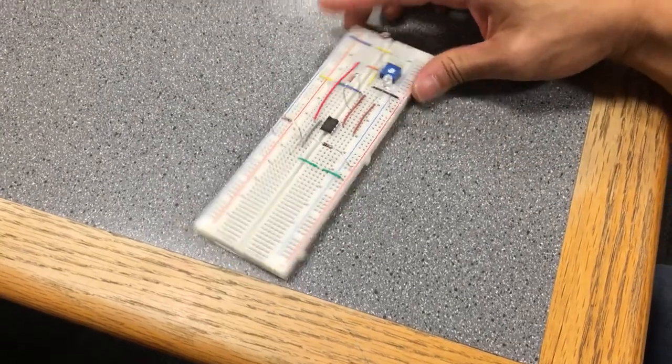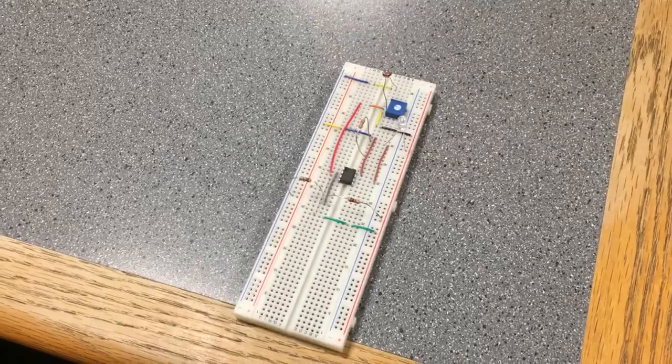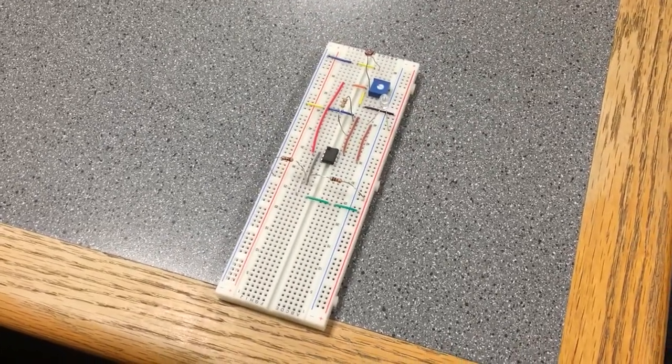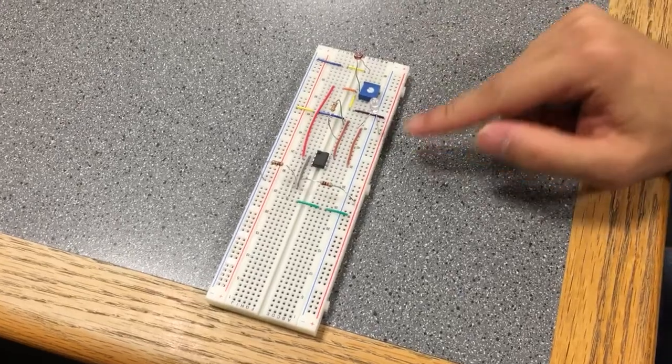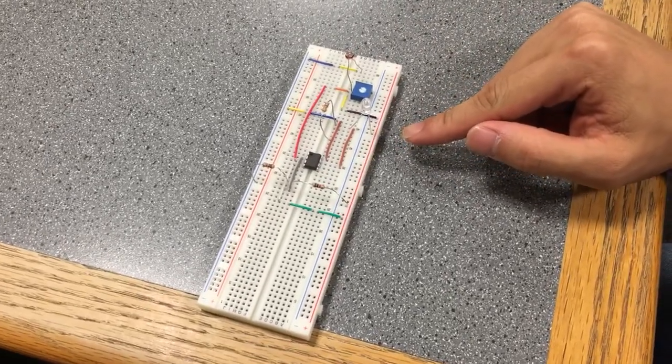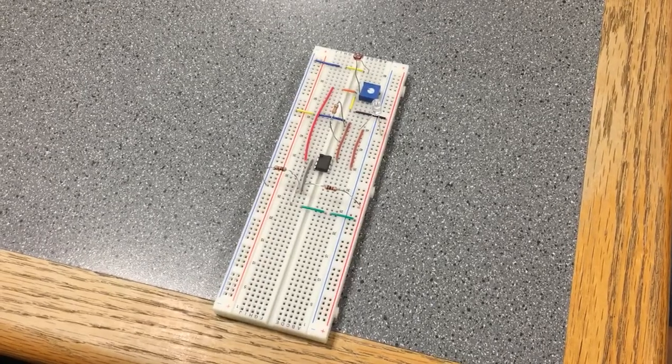Alright, so this is my basic ambient light sensor. Basically what it does is when the LDR senses light, the LED is actually going to turn on. That's the opposite of the shadow sensor, and the purpose...